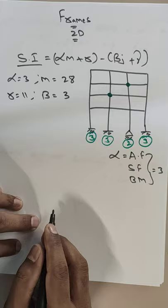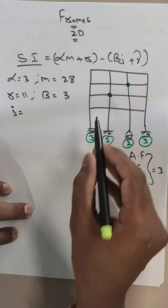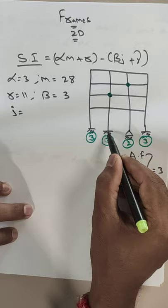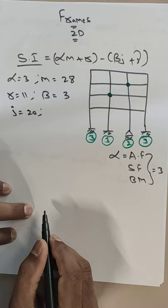J is the number of joints. Counting all joints: 1, 2, 3, 4, 5, 6, 7, 8, 9, 10, 11, 12, 13, 14, 15, 16, 17, 18, 19, and 20. So the total number of joints J is equal to 20.